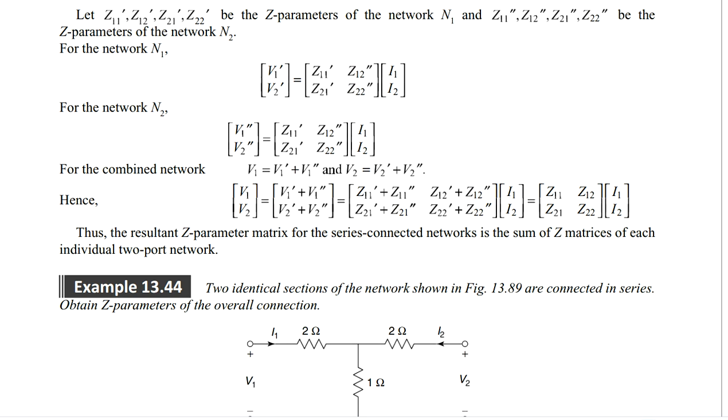Z11 prime plus Z11 double prime. That means we can add individual element matrices because it is just addition. When you do that, I1 I2 will be same as it is, because I1 I2 is common in both for network N1 and for network N2 because the currents are